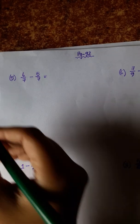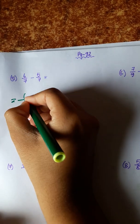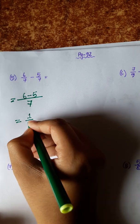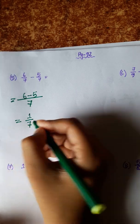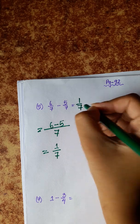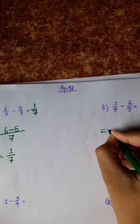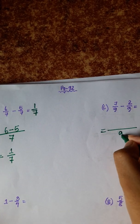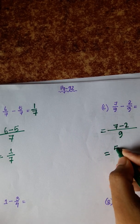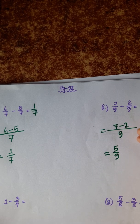Similarly, denominator 7: 6 minus 5 equals 1, so the answer is 1 by 7. Next: denominator 9, 7 minus 2 equals 5, so the answer is 5 by 9.